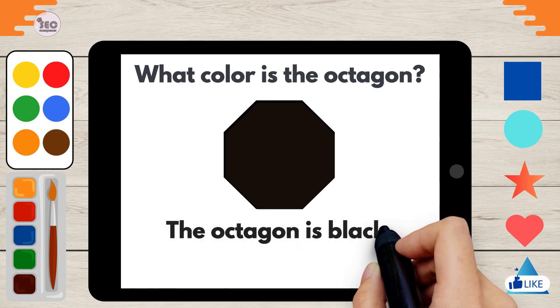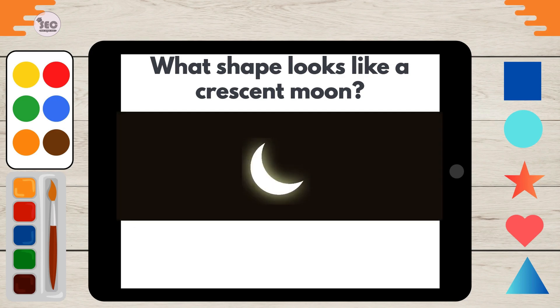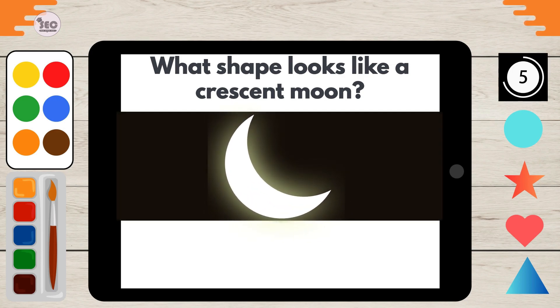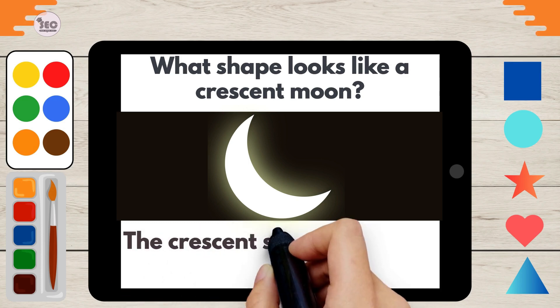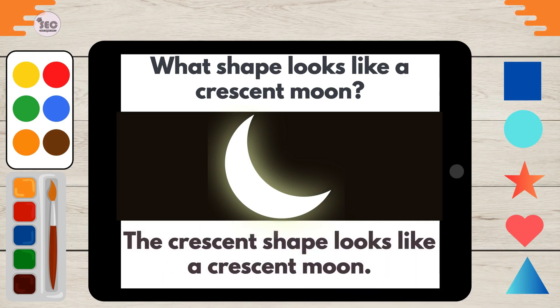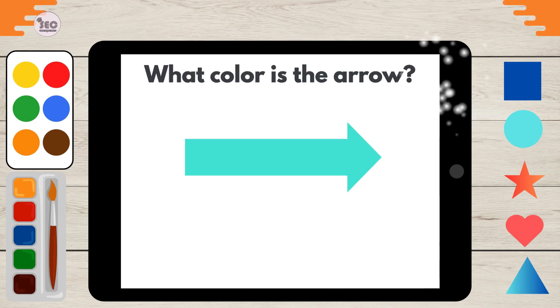The octagon is black. What shape looks like a crescent moon? The crescent shape looks like a crescent moon. What color is the arrow? The arrow is turquoise.